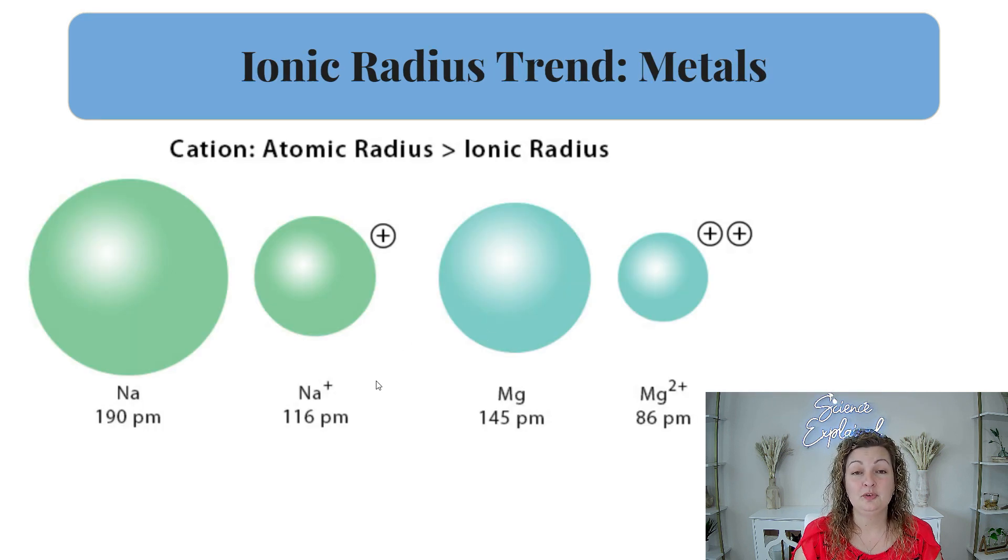So here's an example for you. These are metals. We have sodium and this is neutral. When it becomes a cation, since it is losing electrons, it is getting smaller. Same thing with magnesium. Here it is neutral. And then once it becomes a cation, it's losing electrons and therefore it becomes smaller in size.